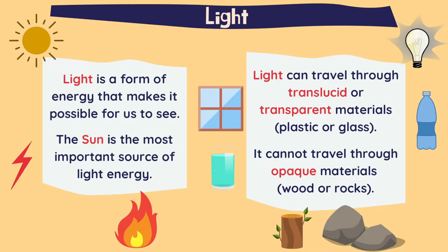We are going to start with light. We already know that light is a form of energy that makes it possible for us to see. And the Sun is the most important source of light energy.